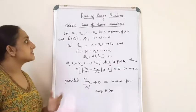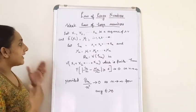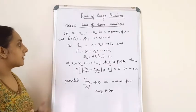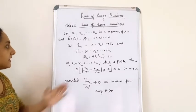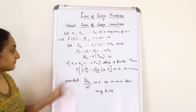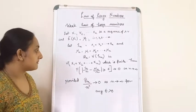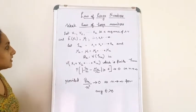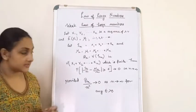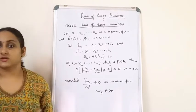Let x1, x2, ..., xn be a sequence of random variables where the expectation of xi equals mu_i for i = 1, 2, 3, ..., n. Let Sn be the sum of all n random variables, and let mu_n equal mu_1 + mu_2 + ... + mu_n. Then let Bn equal the variance of Sn, that is variance of x1 + x2 + ... + xn, which is finite. Then we say that the probability that |Sn/n - mu_n/n| >= epsilon tends to 0 as n tends to infinity, provided that Bn divided by n-squared tends to 0 as n tends to infinity, for all epsilon > 0.